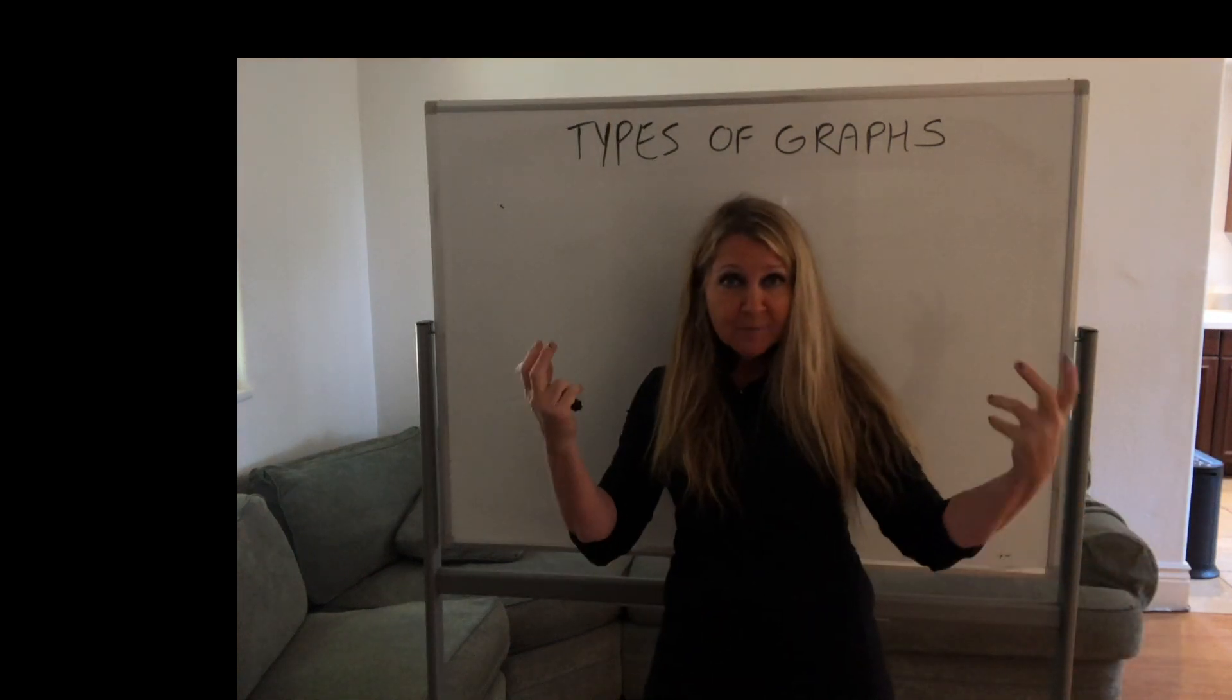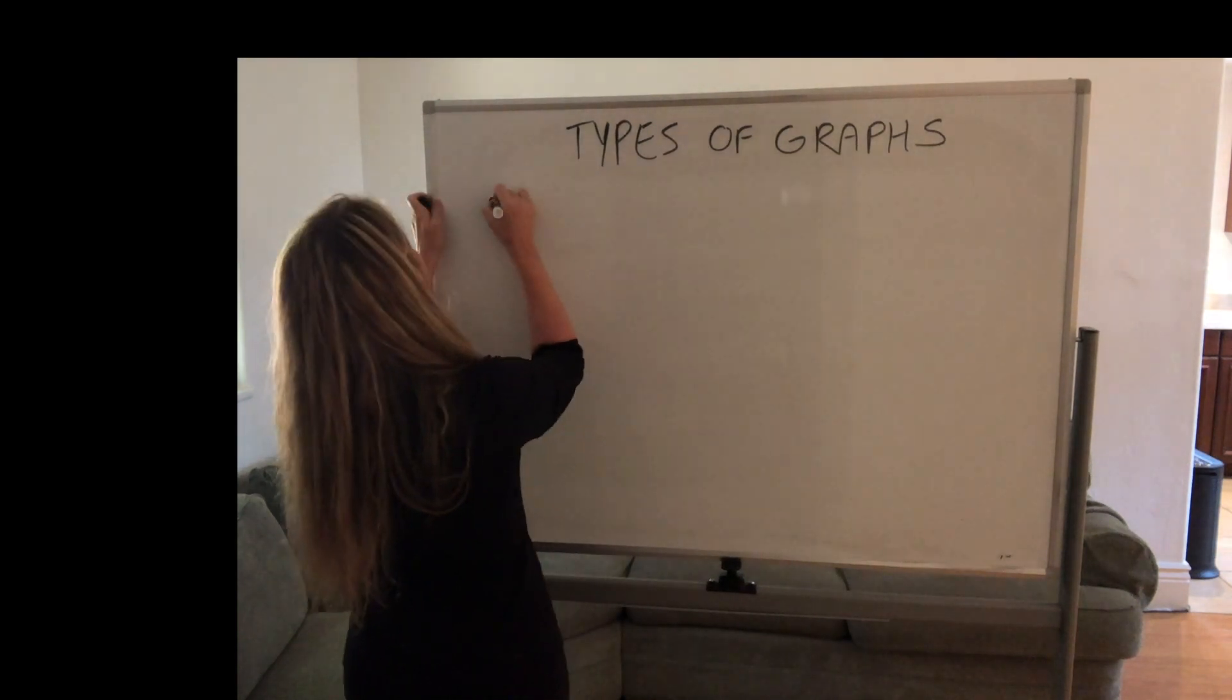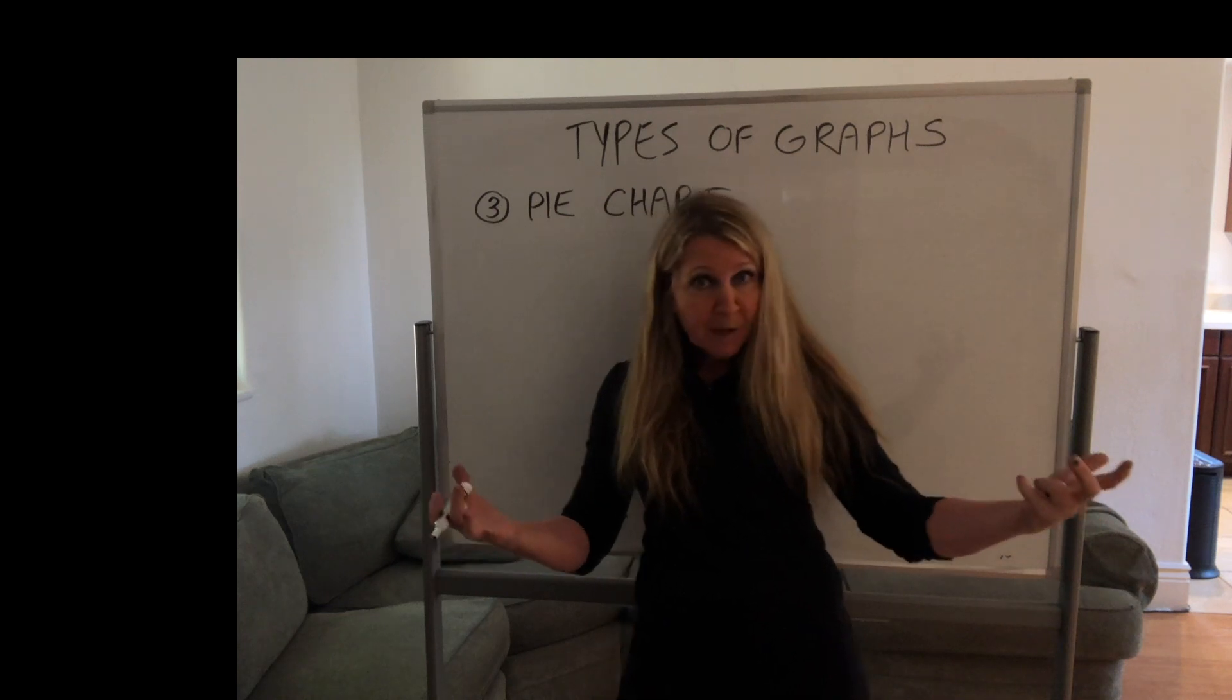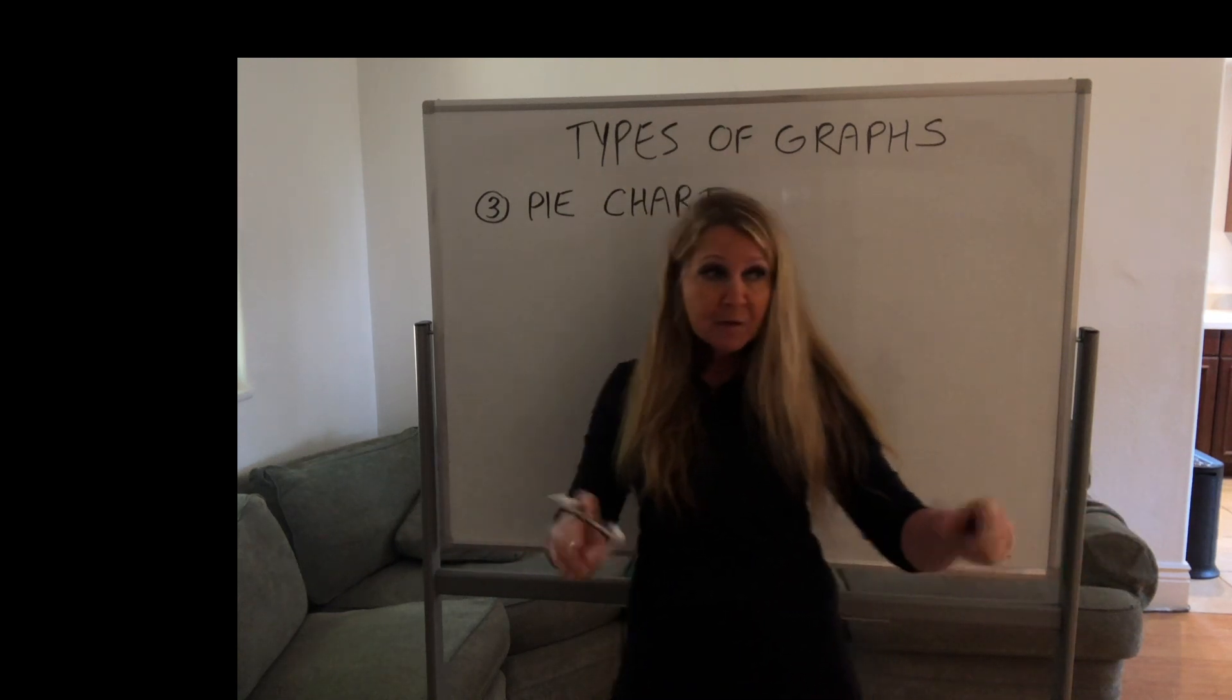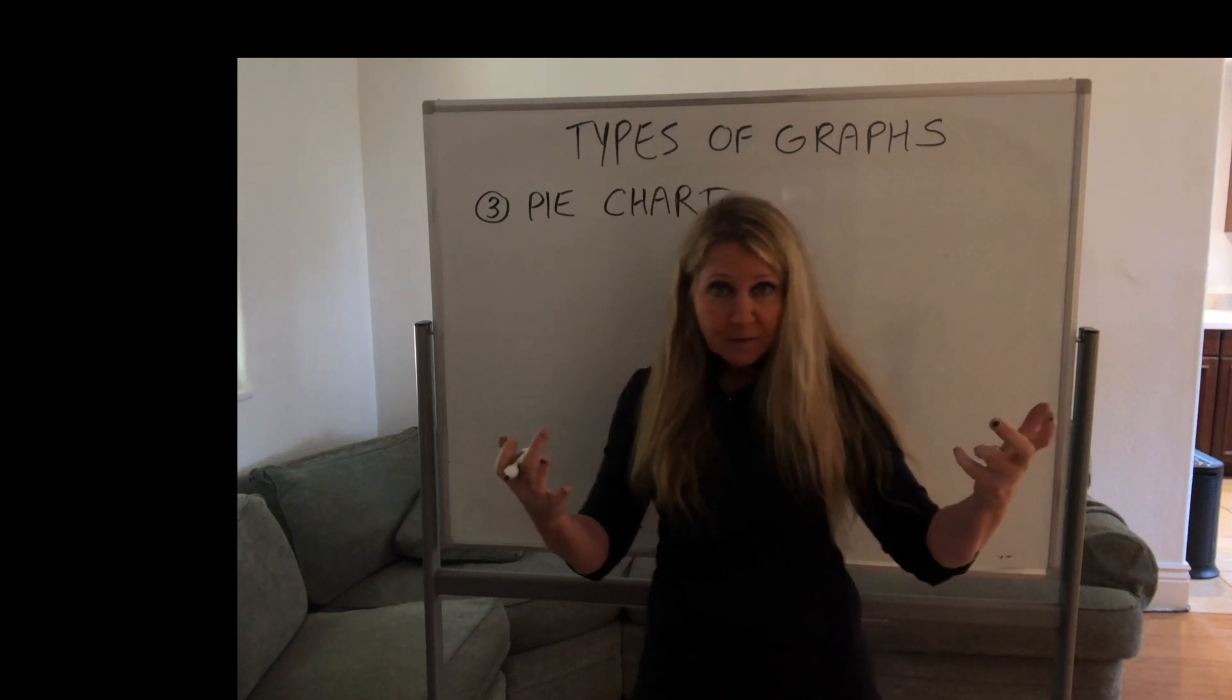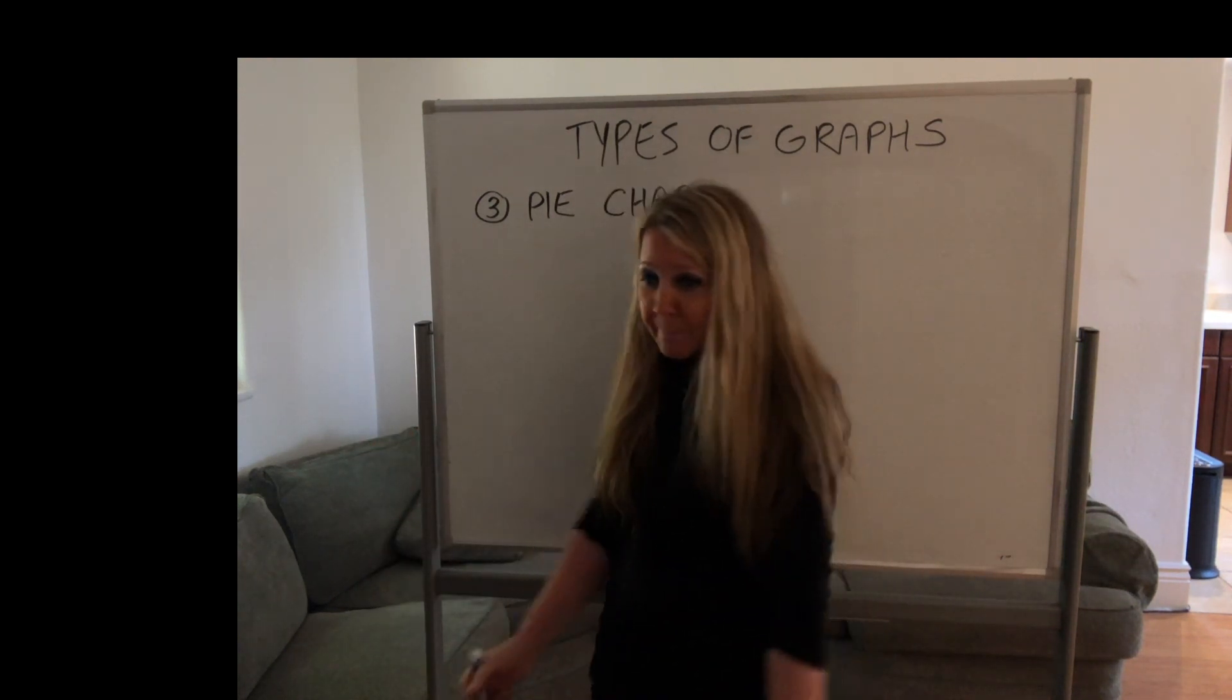So third type of graph or another type of graph is called a pie chart. Pie chart. A pizza pie. I've got to stop eating pizza. I don't know. It's like a habit now. Every week I order like pepperoni pizzas. So pie chart.